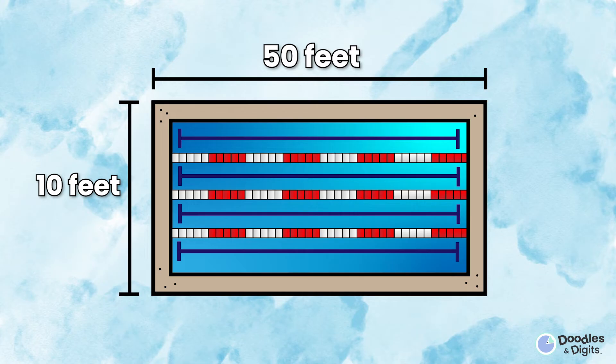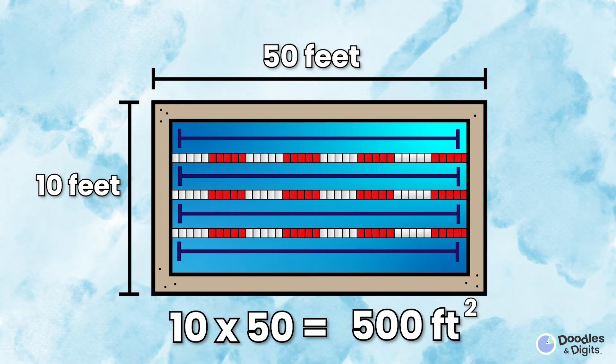All right, let's try this swimming pool. We're going to multiply the length times width, so 10 times 50. And our answer is going to be 500 feet squared.